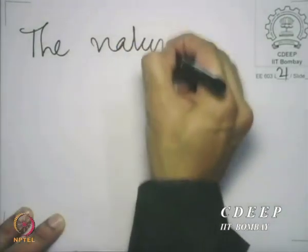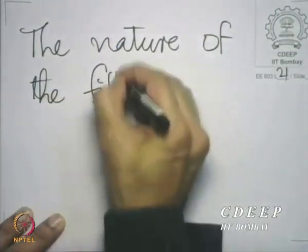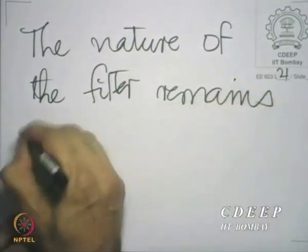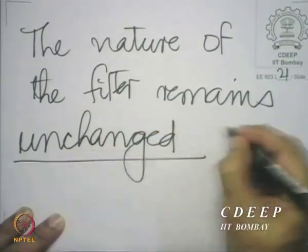We have the frequency specifications in the analog domain, and the tangent function is a monotonically strictly increasing function between 0 and pi. Therefore, whatever be the nature of the filter in the discrete domain, that nature is preserved in the analog domain. If it is a low pass filter, it is translated into an analog low pass filter; if high pass, into an analog high pass filter; and similarly for band pass and band stop. The nature of the filter remains unchanged in the analog domain.